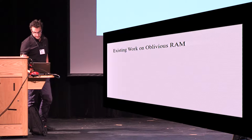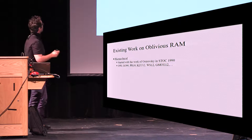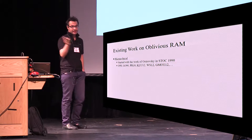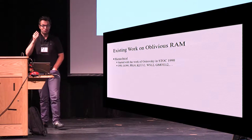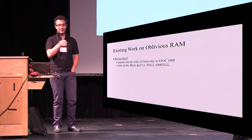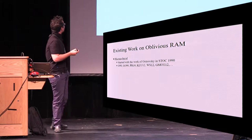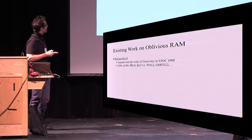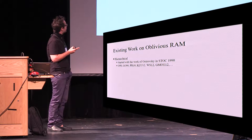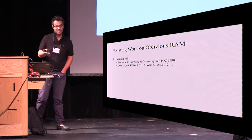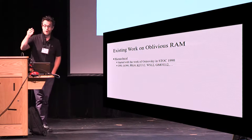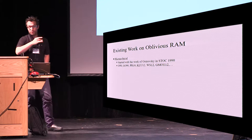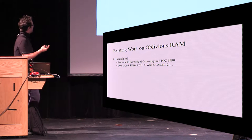Regarding existing work: a naive way to solve the problem is to just access everything — to access one block, you need to access a linear number of blocks, which is not good. In 1990, work by Raphael Ostrovsky showed we can do it with logarithmic overhead. To obliviously access one block, you only need to access a polylogarithmic number of blocks, which was pretty cool.